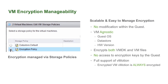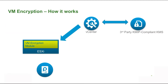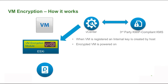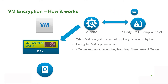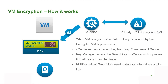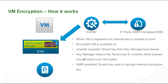How does this work? When I create a virtual machine and apply the encryption policy, the ESX host creates a unique data encryption key. That key in turn is encrypted with a key from a third-party key manager. When I power on the virtual machine, vCenter requests that key from the key manager. That key is then sent from vCenter to the ESX host.